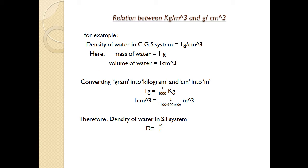Now what is the relation between kg per meter cube and gram per centimeter cube? I have explained this relationship with the help of one example using the density of water. We know that density of water in CGS system is 1 gram per centimeter cube at 4 degrees Celsius. The meaning of this is that the mass of water is 1 gram for 1 centimeter cube volume. Now we are going to convert gram and centimeter cube into kg and meter cube.